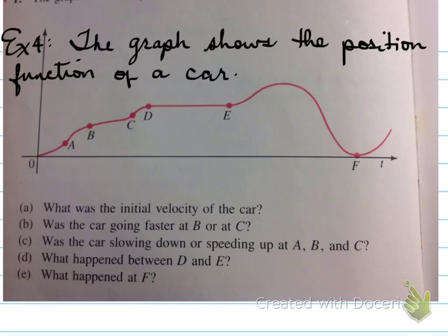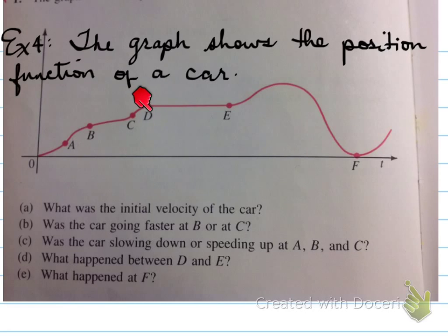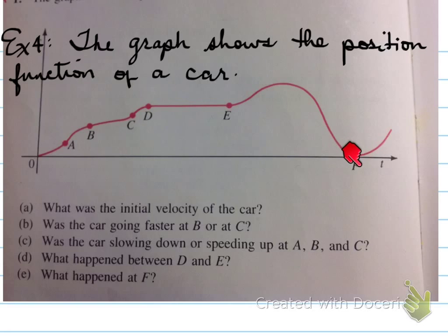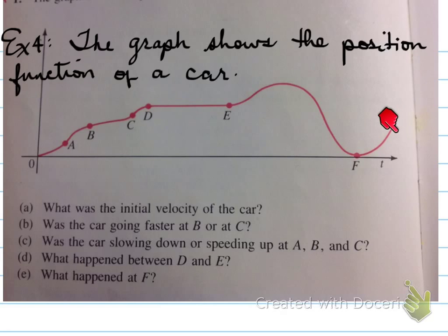Was the car slowing down or speeding up at A, B, and C? We would have to determine both the velocity and the acceleration to know those values — we'll go over those in class. Between D and E, the car probably stopped because the slope of the tangent is 0, meaning velocity equals 0. At F, this is a position function where the car turned around and went back to its original position, changing from slopes in one direction to slopes in the other direction.